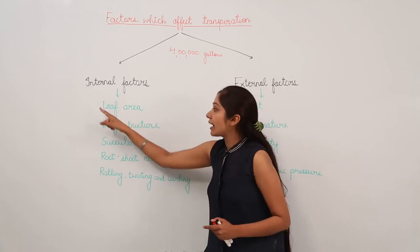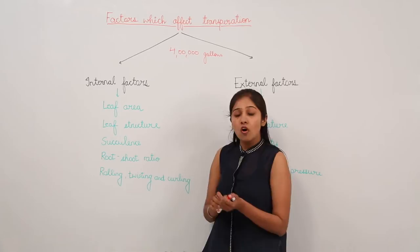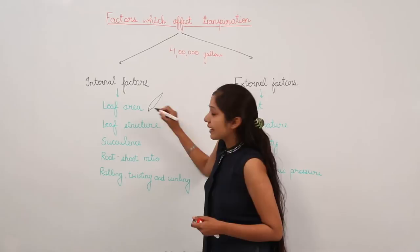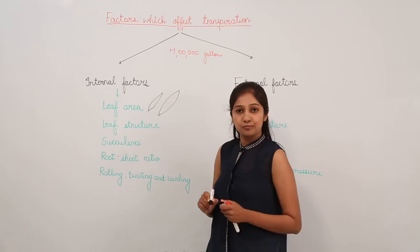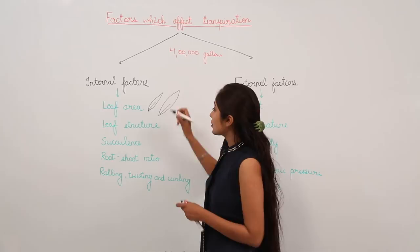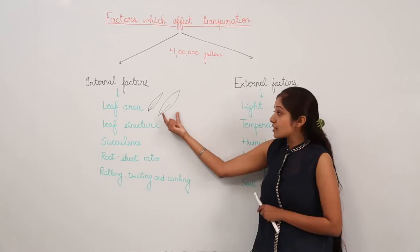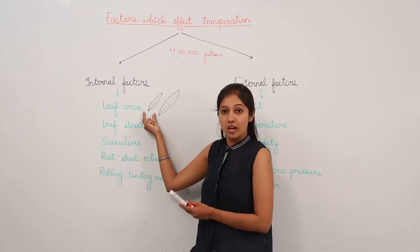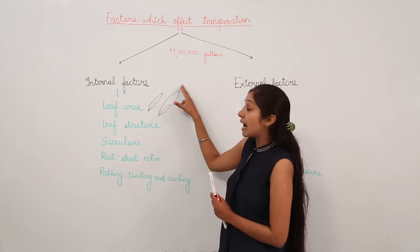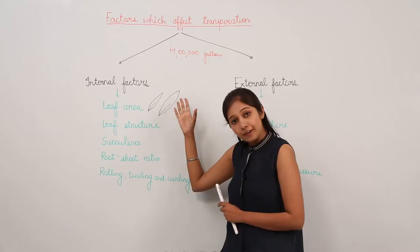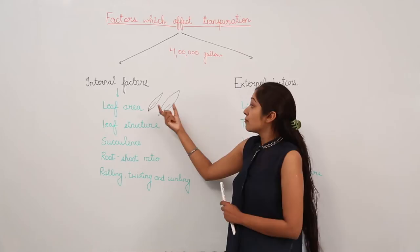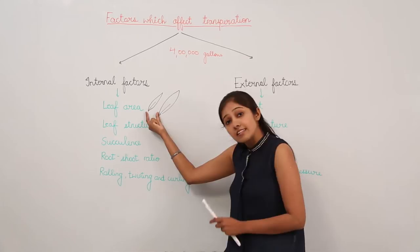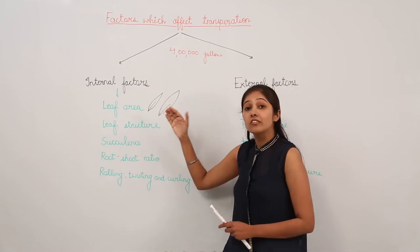The first internal factor is leaf area. Suppose we have a leaf of a small size and another leaf of a larger size. Obviously, the leaf with more surface area is going to transpire more. So larger the surface area of the leaf, more will be the rate of transpiration. If it is a smaller leaf, the rate of transpiration will be lower. More the area, more is the transpiration; less the area, less is the transpiration. More surface area of the leaves leads to more transpiration.